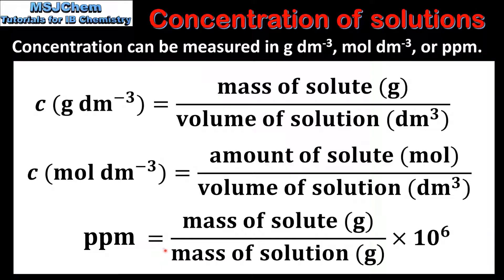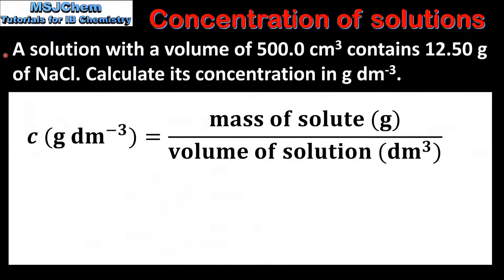In our first example we have a solution with a volume of 500 cubic centimeters that contains 12.50 grams of sodium chloride. Calculate its concentration in grams per cubic decimeter. To do this we will divide the mass of the solute in grams by the volume of the solution in cubic decimeters.